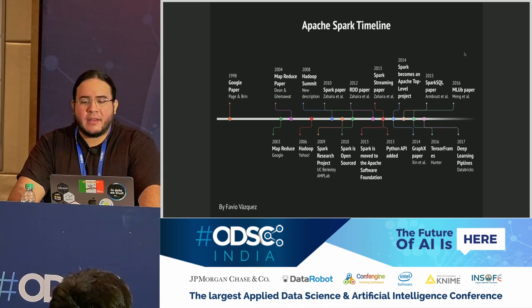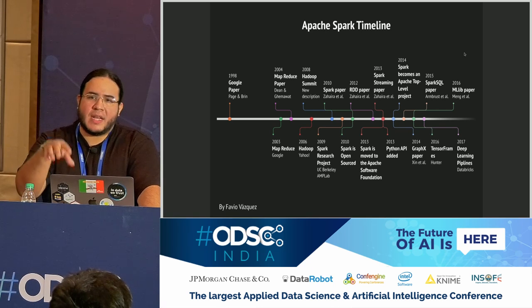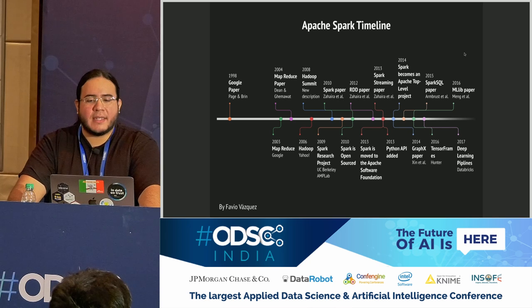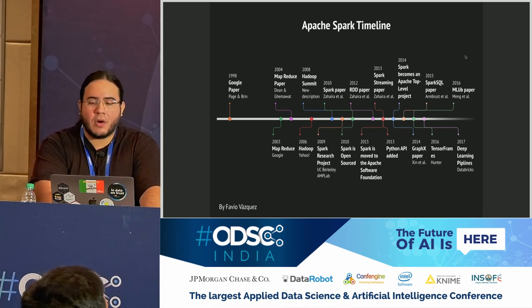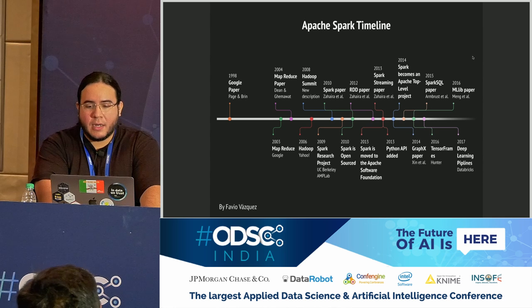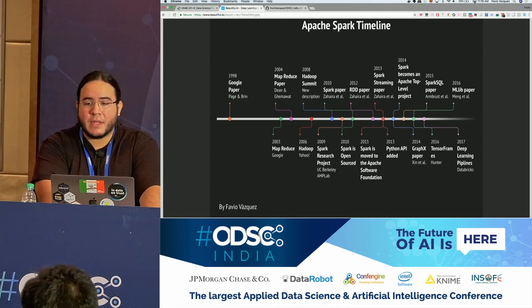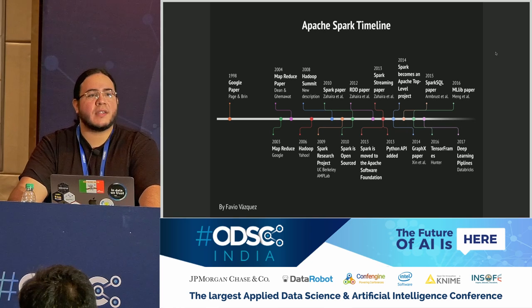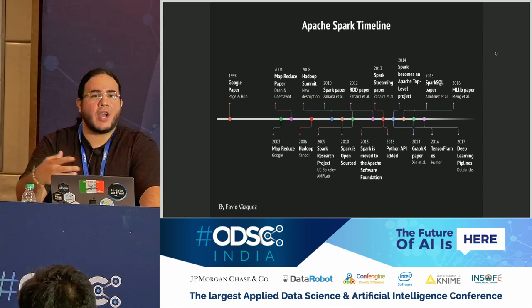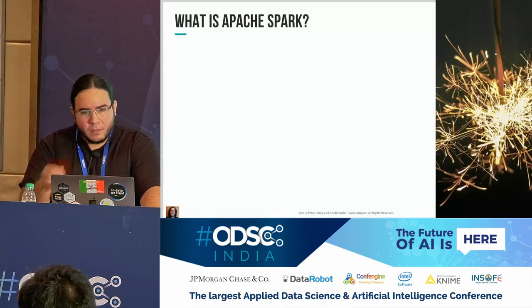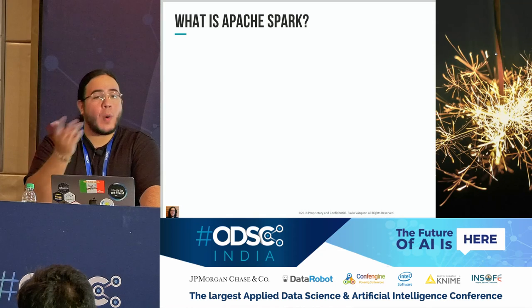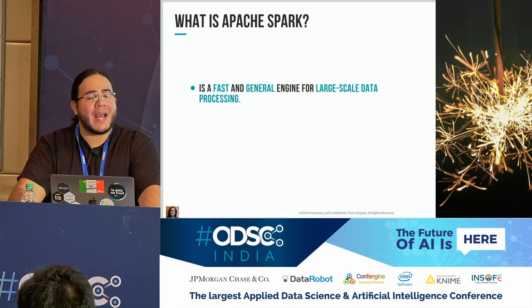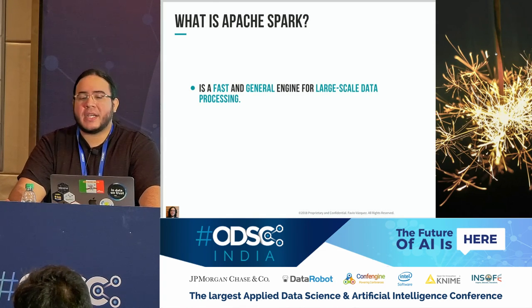After that, the next part interesting for this talk is that in 2017, last year, the guys from Databricks created something called Deep Learning Pipelines. And Deep Learning Pipelines was the beginning of this history of Spark and deep learning. So what's Apache Spark in simple words? It's a fast and general engine for large-scale data processing.